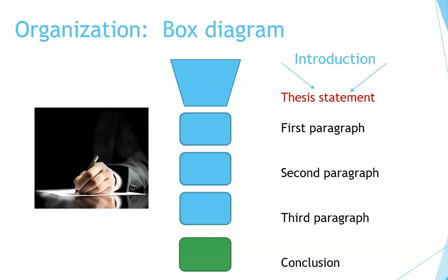From the box diagram, you can see it follows a certain pattern. We start with the introduction, which takes us from general ideas to a specific thesis statement or main idea for the paper. Then each of the next boxes is one paragraph of the essay containing those ideas, and the last box includes the conclusion. We'll talk more about introduction and thesis statement later.